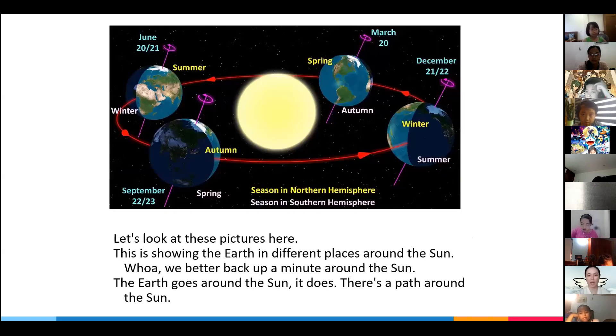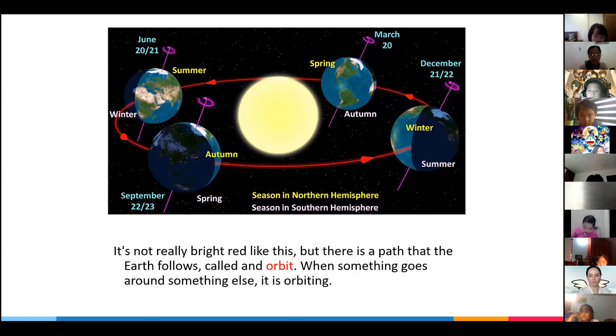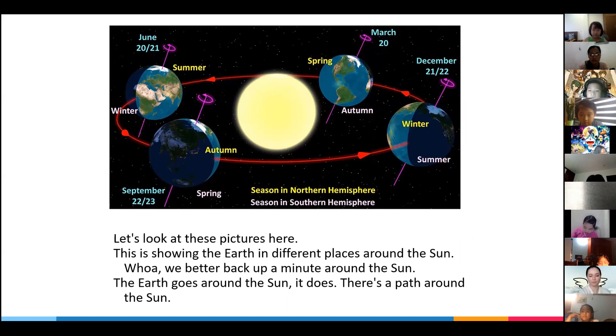Let's look at this picture here. This is showing the Earth in different places around the Sun. Whoa, you better back up a minute. Around the Sun, the Earth goes around the Sun, it does. There's a path around the Sun.